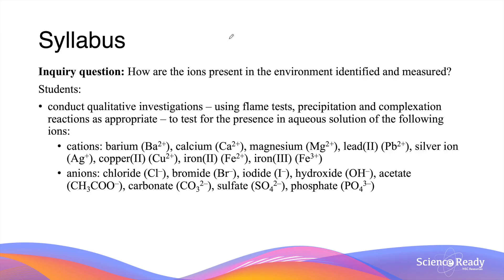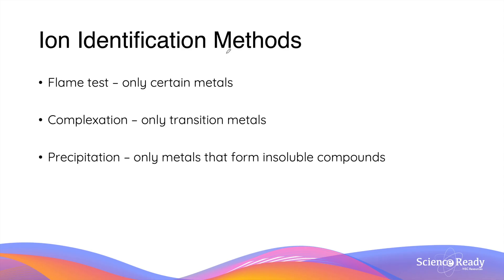Hey everybody. In this video we'll be looking at the qualitative test for identifying cations. In the HSC syllabus there are three main ways we can qualitatively identify and confirm the presence of metal cations, and these are the flame test, complexation and precipitation.